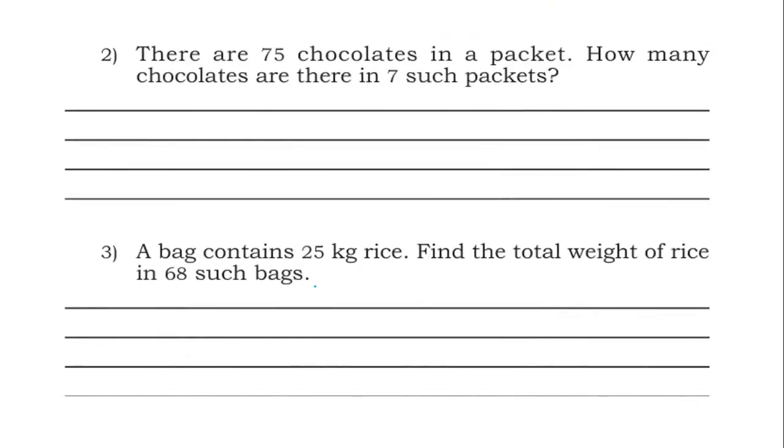Second one. There are 75 chocolates in a packet. How many chocolates are there in 7 such packets? One packet contains 75. They are asking in 7 such packets, how many chocolates are there? 7 fives are 35, put 5, carry 3. 7 sevens are 49, 49 plus 3, 52. 525. There are 525 chocolates in seven packets.